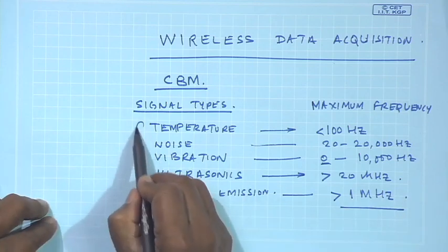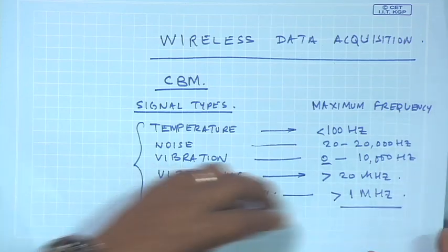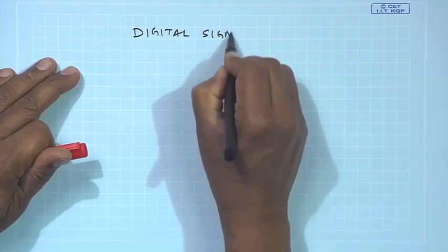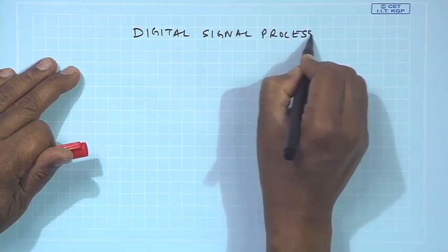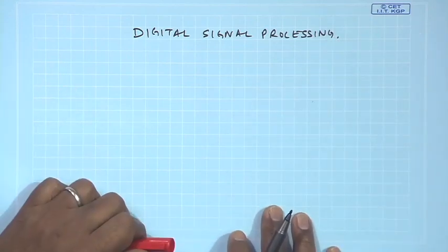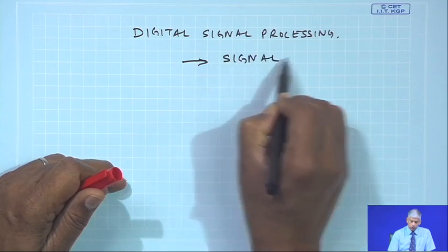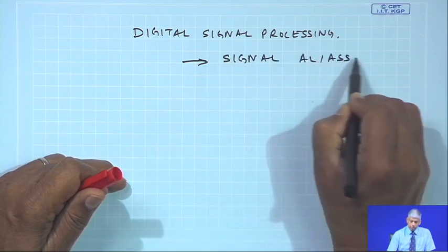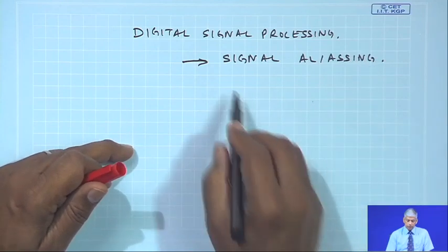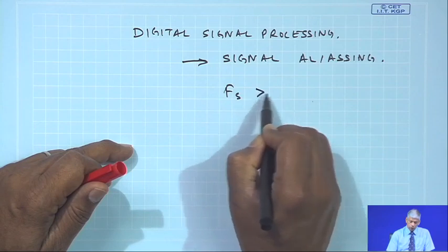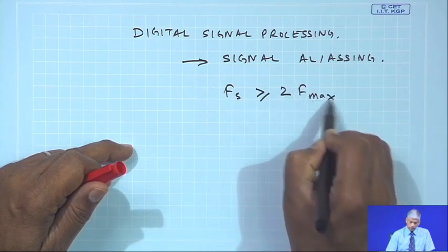In CBM we are going to come across all these signals, and at the end of the day we have to do what is known as digital signal processing. Recalling the class on computer aided data acquisition, I mentioned the condition of signal aliasing. To avoid signal aliasing, we have to have a sampling frequency which is greater than or equal to twice of f_max.